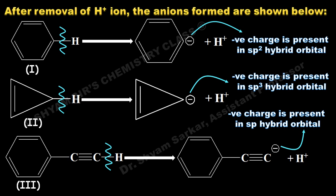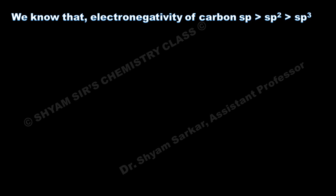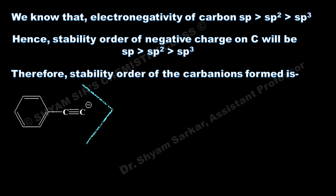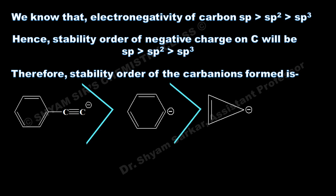There are three different carbon environments with three different types of hybridization. We know the electronegativity order of carbon: sp hybrid orbital is greater than sp² hybrid orbital, which is greater than sp³. The stability order of negative charge on carbon will be in the same order, because the carbon atom with higher electronegativity will stabilize the negative charge more. So the stability order of carbanion will be: sp > sp² > sp³.